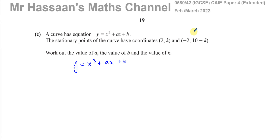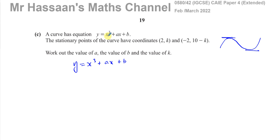The stationary points of a curve are the points of zero gradient. This is a cubic curve with a positive x cubed coefficient, so it's going to look something like this — there's a stationary point where x equals 2 and another where x equals negative 2. That's how a cubic curve with a positive x cubed coefficient looks when it has two stationary points. At a stationary point, dy/dx equals zero, so the first step is to find what dy/dx is.